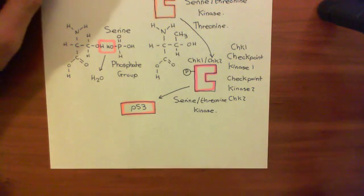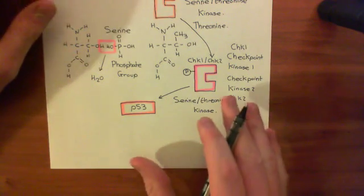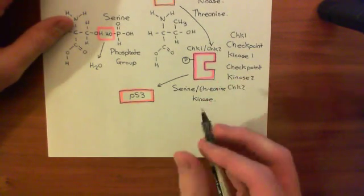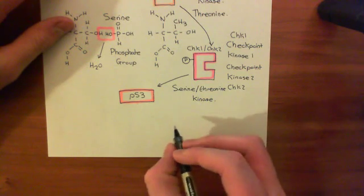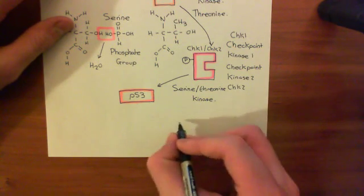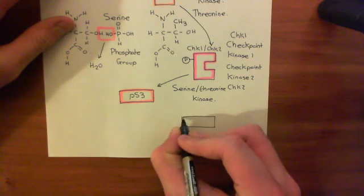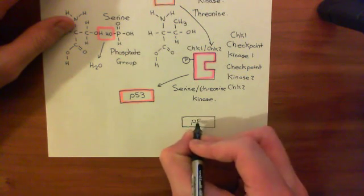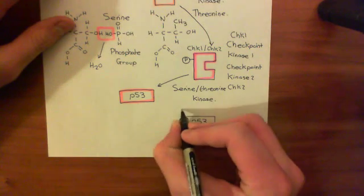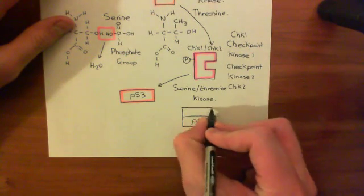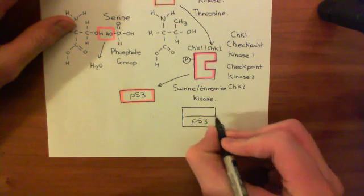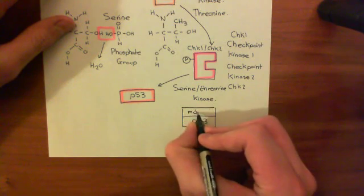P53 is usually kept inactive by another protein known as MDM2. P53 is usually, as I say, kept inactive by being bound to this other protein, MDM2. MDM2 is usually what is stopping P53 from arresting the cell cycle and activating DNA repair mechanisms.